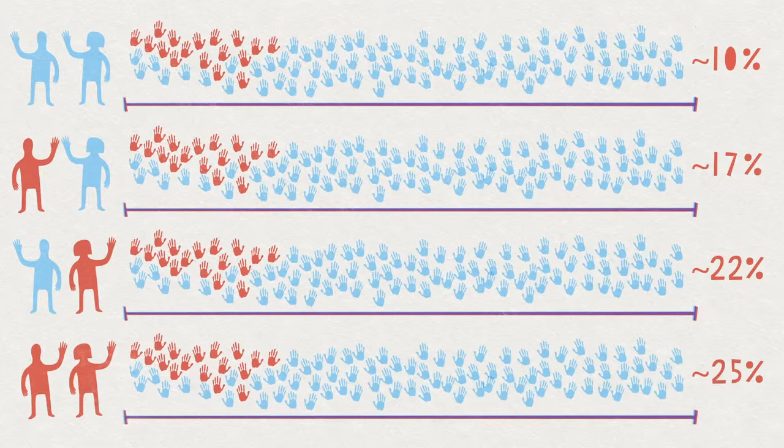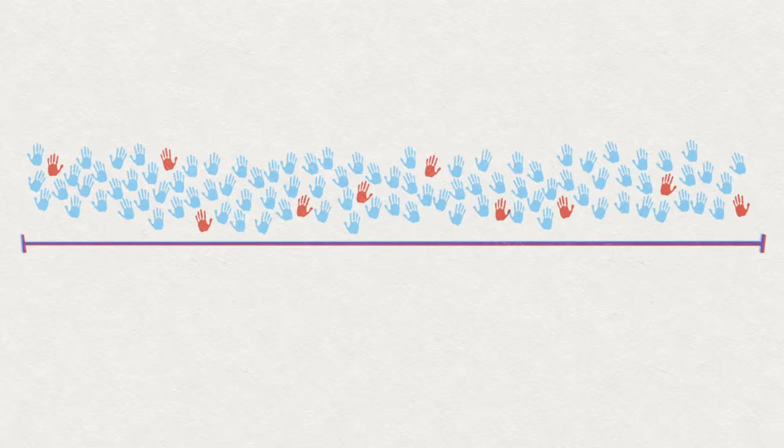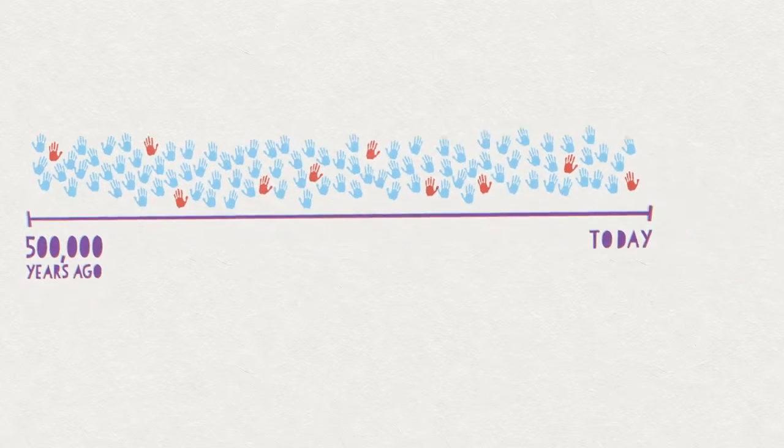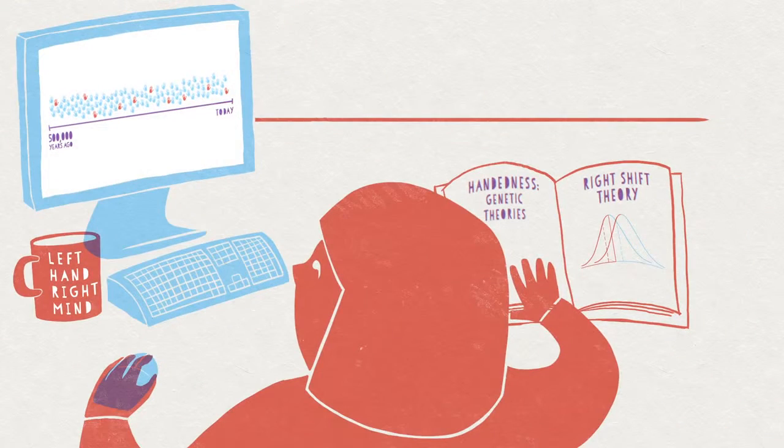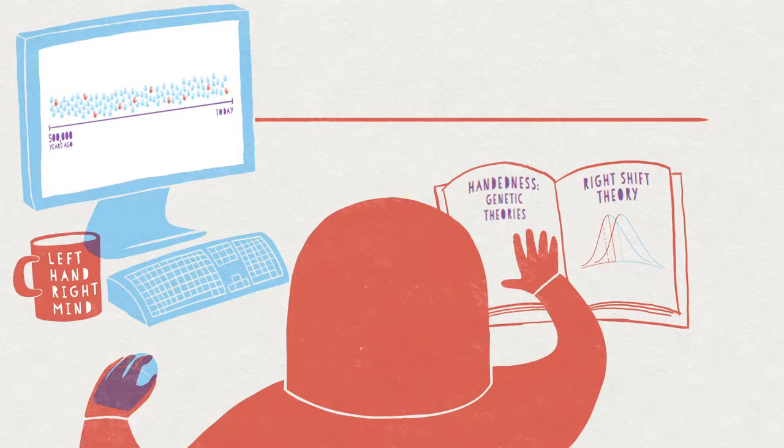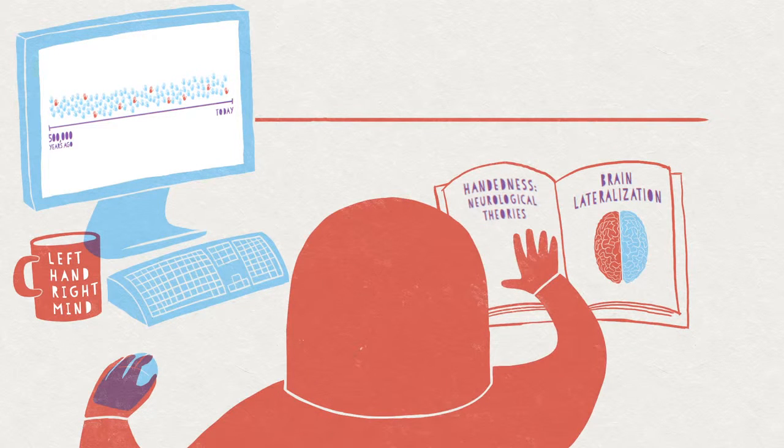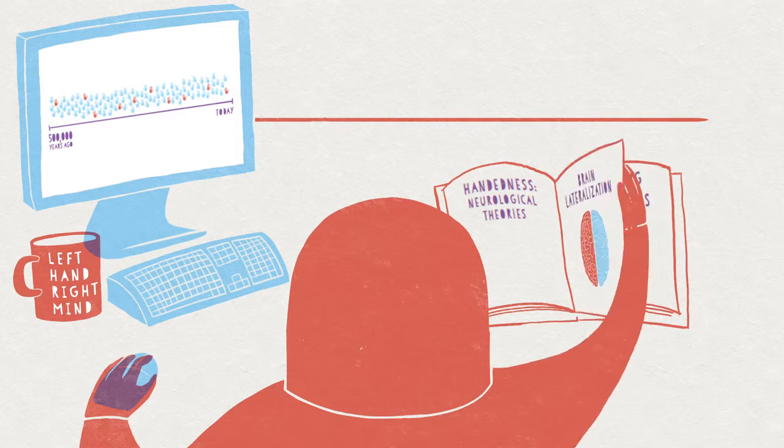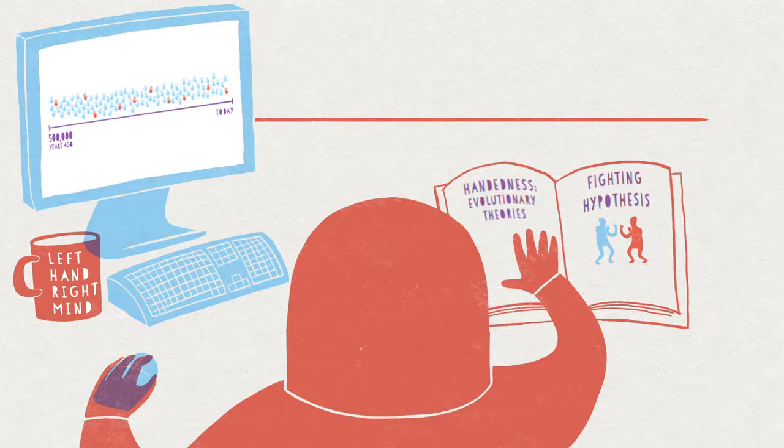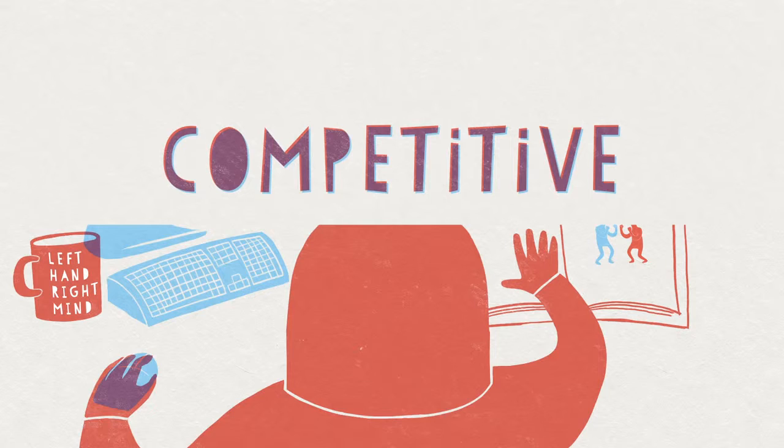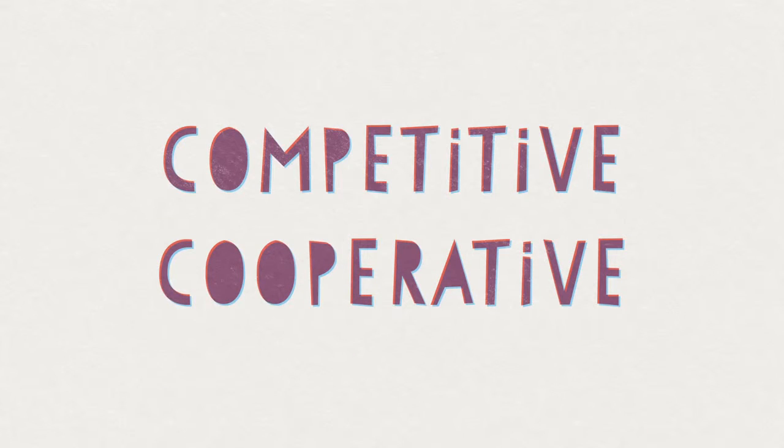All of this implies there's a reason that evolution has produced this small proportion of lefties and maintained it over the course of millennia. And while there have been several theories attempting to explain why handedness exists in the first place, or why most people are right-handed, a recent mathematical model suggests that the actual ratio reflects a balance between competitive and cooperative pressures on human evolution.